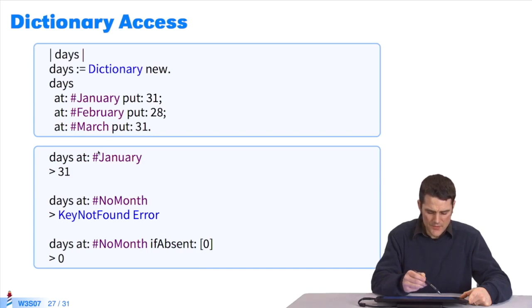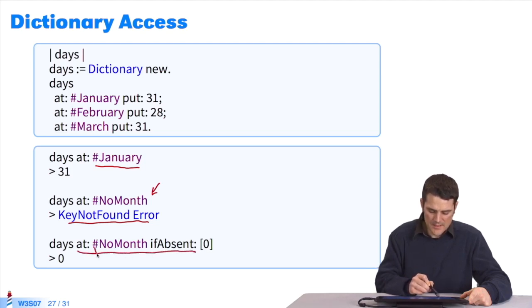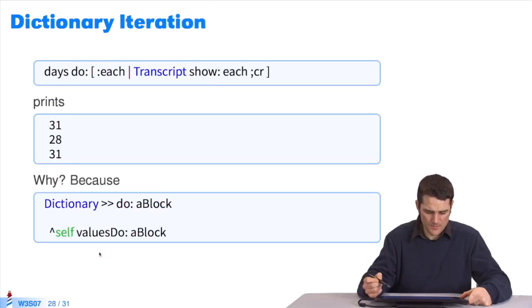Dictionaries. If I want to access a specific value in a dictionary, I just need to use AT: and to specify the key whose value I want. If the key doesn't exist, I will get an error in return. To avoid that, I can use AT:IFABSENT:. I write AT: plus a key that doesn't exist in the dictionary. If it is absent, it will return this value, zero. The key doesn't exist in the dictionary, so I get the value zero.